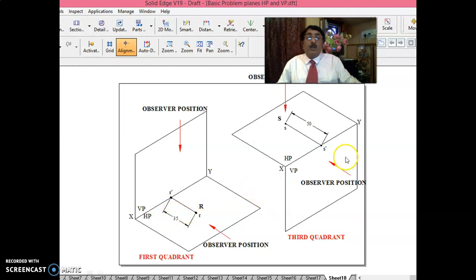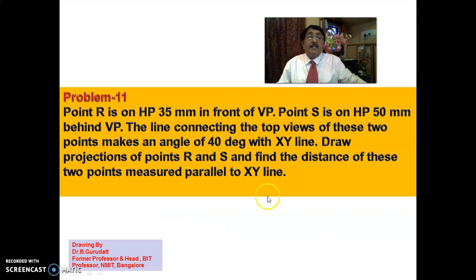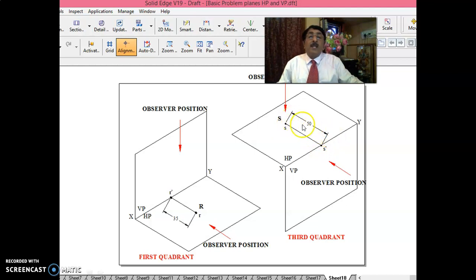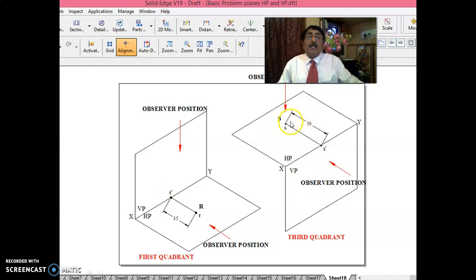Point S is on HP, 50mm behind VP. When it is on HP and behind VP, when you look from the front, the front view S-dash will appear on XY line only, and the top view S will be 50mm away from XY line. So for point R: 35mm in front of VP — R-dash on XY line, R at 35mm. For point S: 50mm behind VP — front view will be here and top view will be here.